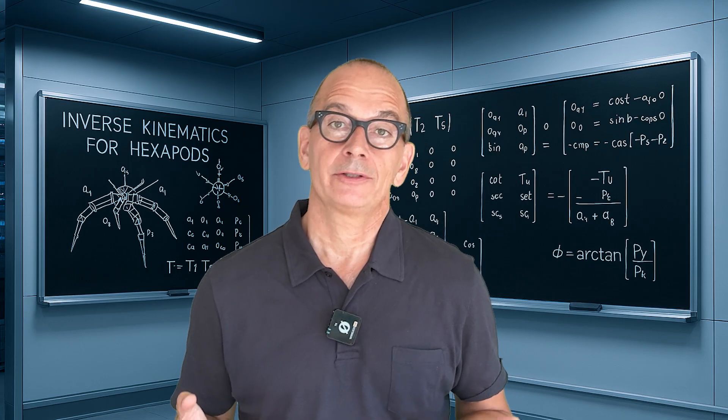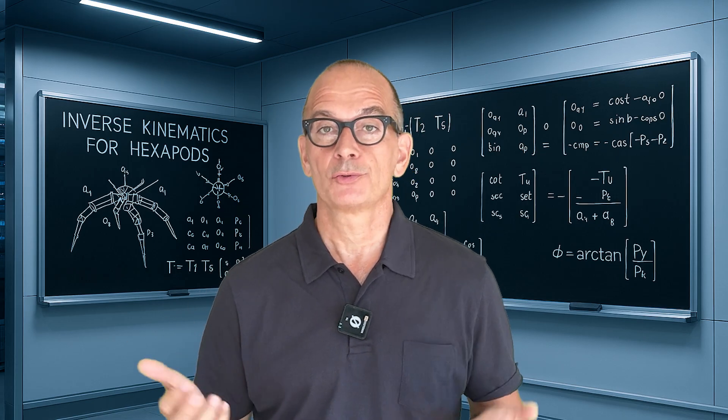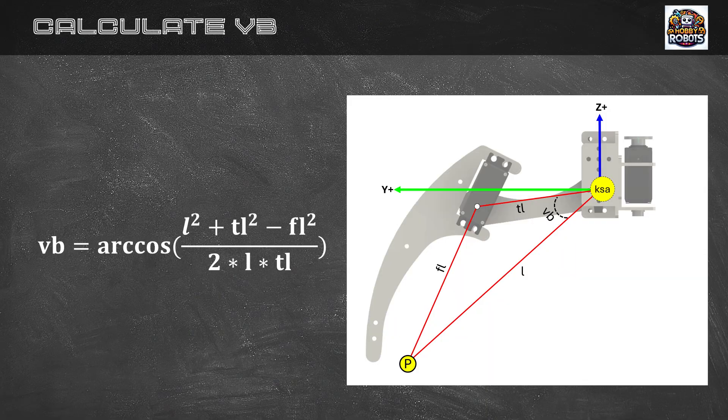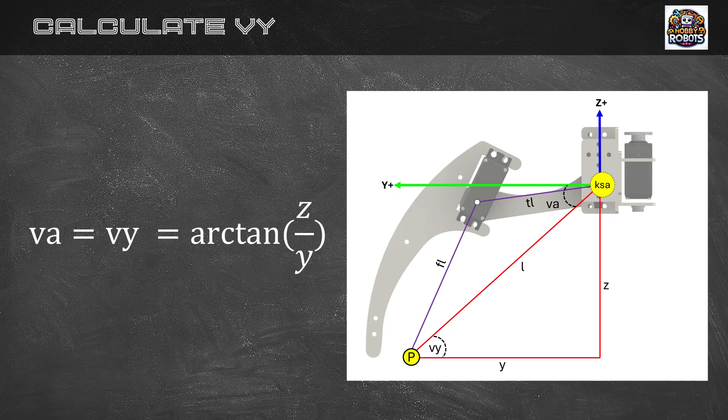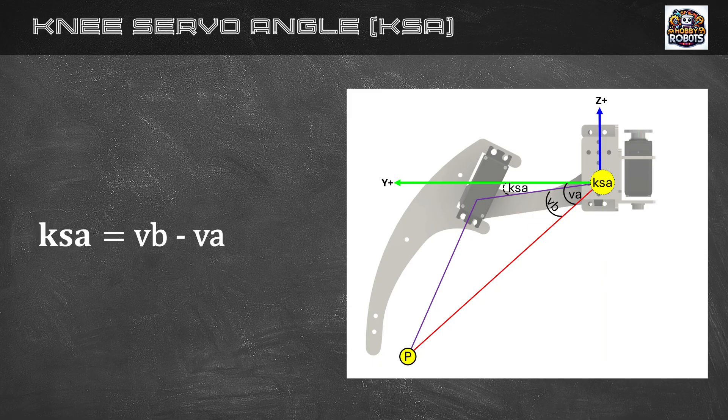The next thing we want to calculate is the knee servo angle and this requires a few steps. Since we have all three lengths of the red triangle FL, TL, and L we can calculate the angle VB using this formula. The other angle we need to calculate is the angle between the line L and the y axis. That angle is the same as the angle on the right red triangle so we can use this simple formula to calculate VY and then VA will be the same. Now that we know both VA and the VB angles the knee servo angle can be obtained by simply subtracting VA from VB.